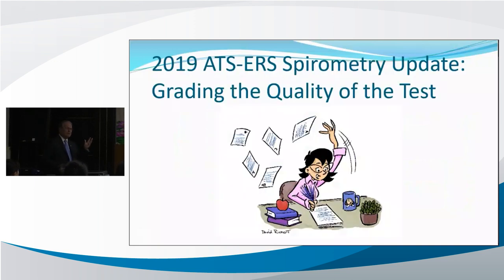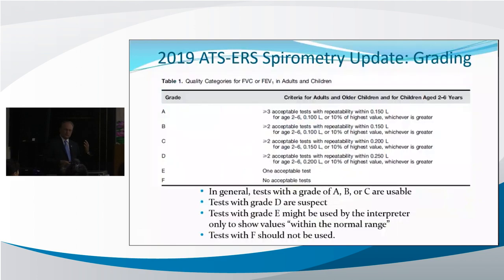In the latest technical standard, they also have a grading scheme for a test. Most spirometer devices now will tell you on the final report what grade was achieved for that test session. The grading was selected somewhat arbitrarily: if you get three acceptable and two that are repeatable, you get a grade A. If you get two that are acceptable and repeatable, you get a grade B.